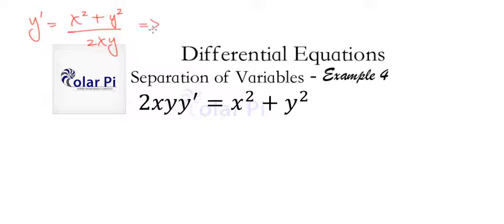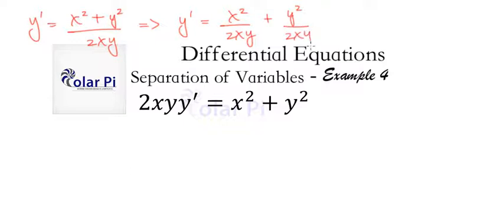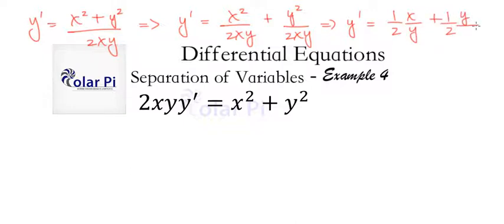We can say that is the same as y' equal to x² over 2xy plus y² over 2xy, which simplifies to y' equals one-half times x over y plus one-half times y over x.